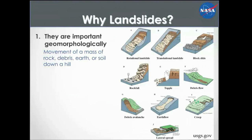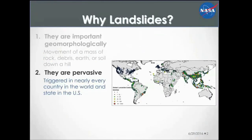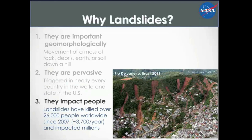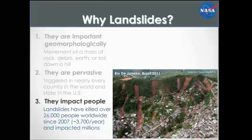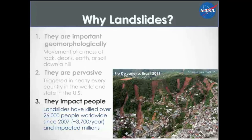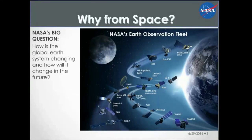Why do we need to talk about landslides? First, it's a natural erosion process — a mass of rock, debris, or soil moving down a hill. The problem is they're pervasive; they happen in every country and affect every state in the United States. They have killed over 26,000 people worldwide since 2007 and can impact millions of people every year. What you're seeing here is an aerial view of landslides triggered outside of Rio de Janeiro, Brazil, in 2011, that caused almost 1,000 fatalities from a single rainfall event.